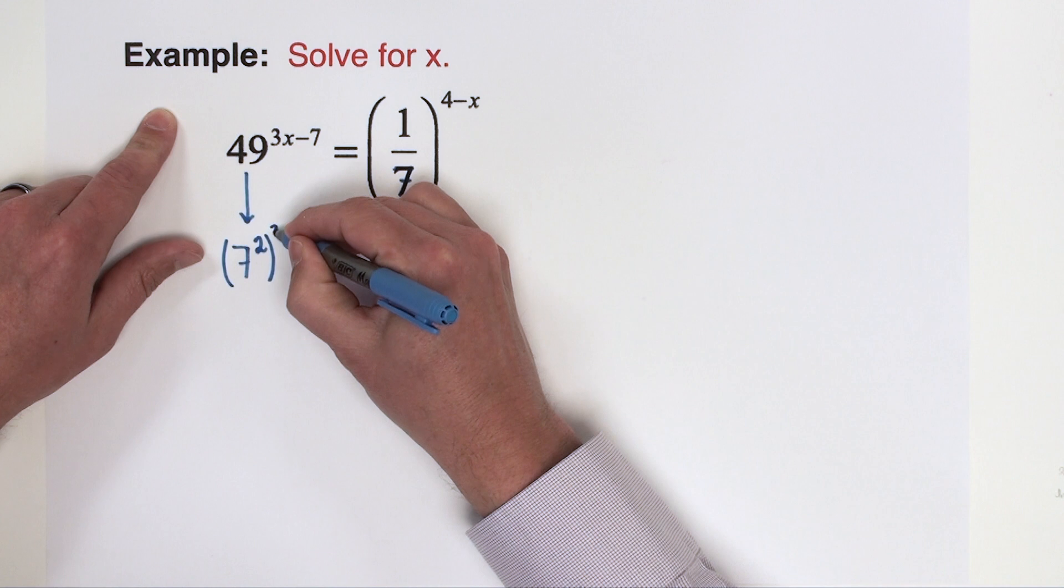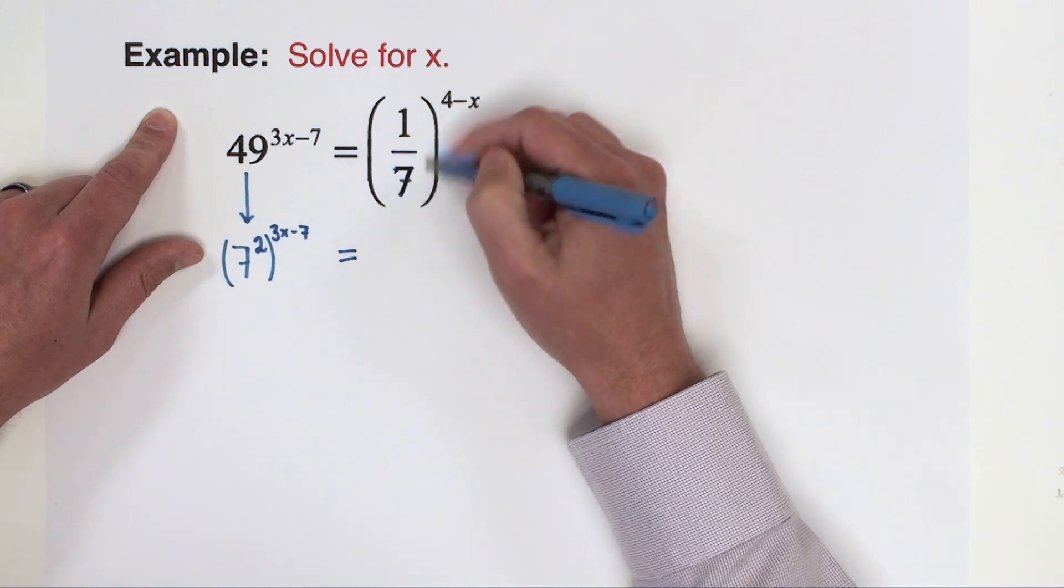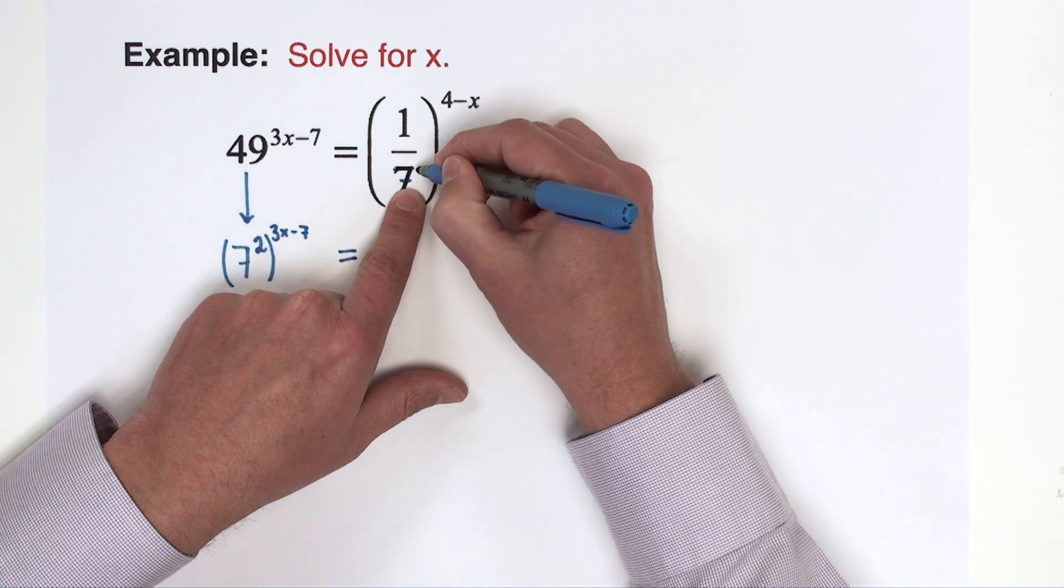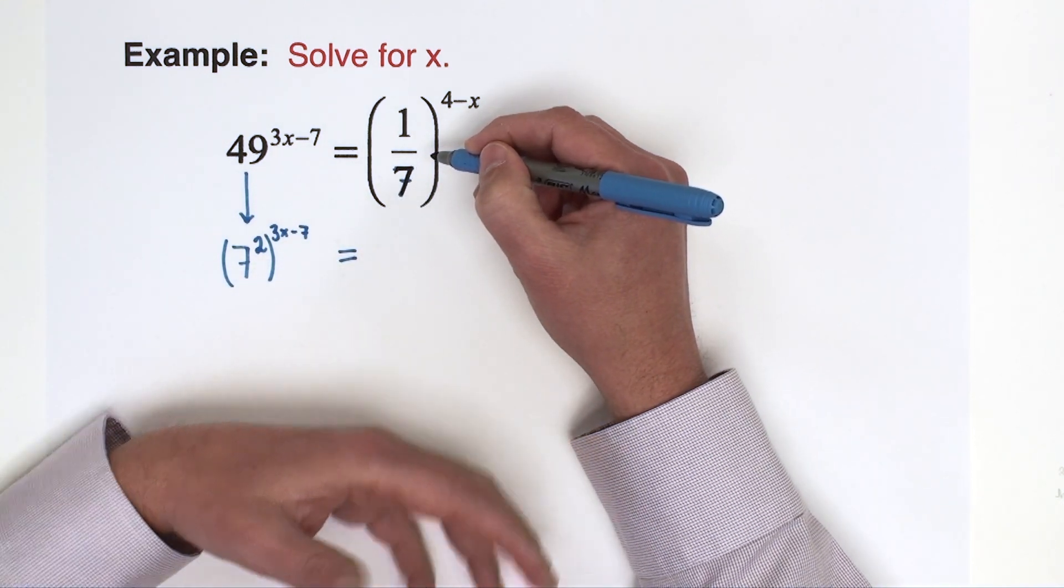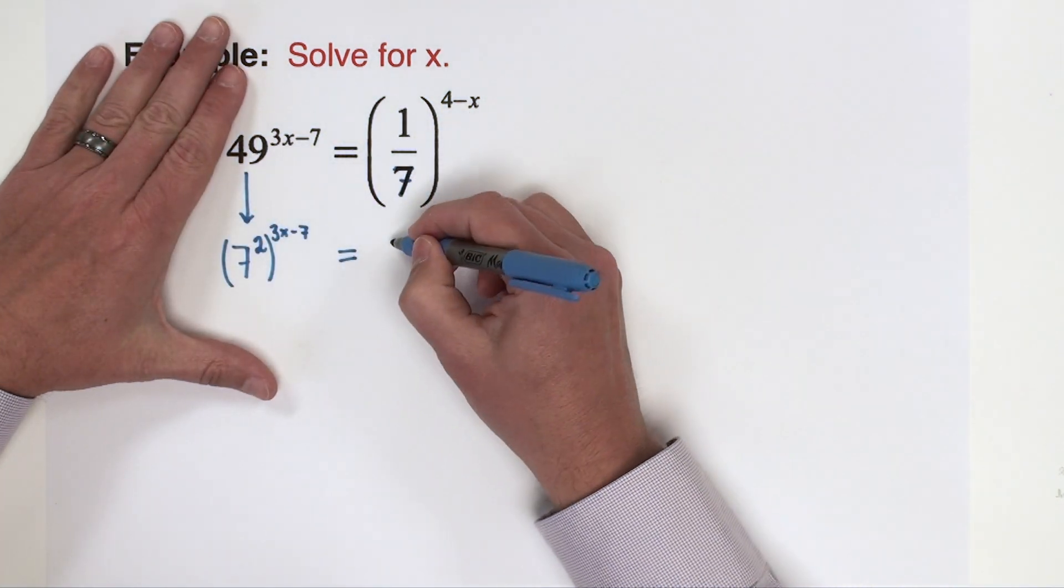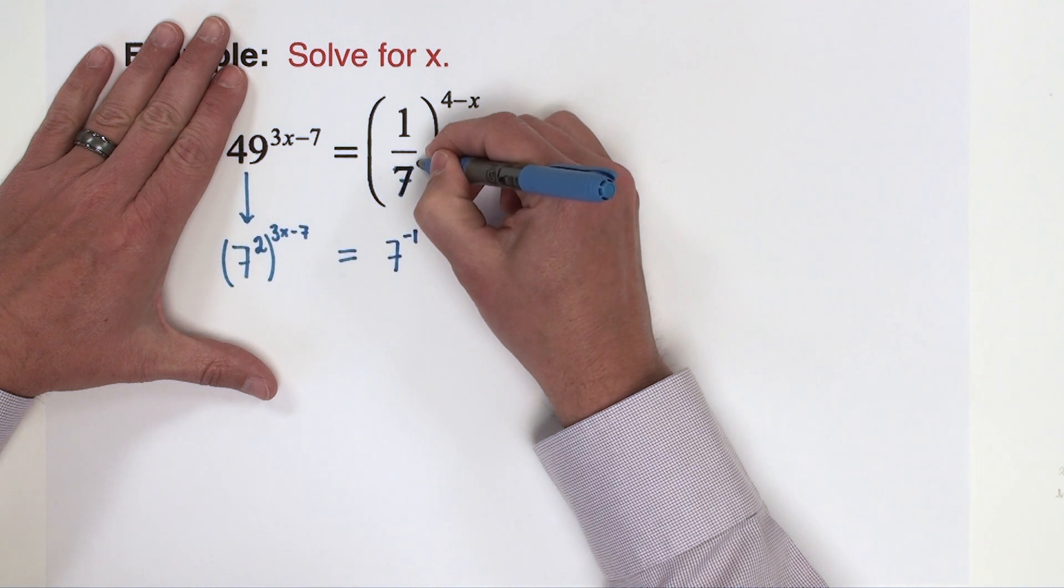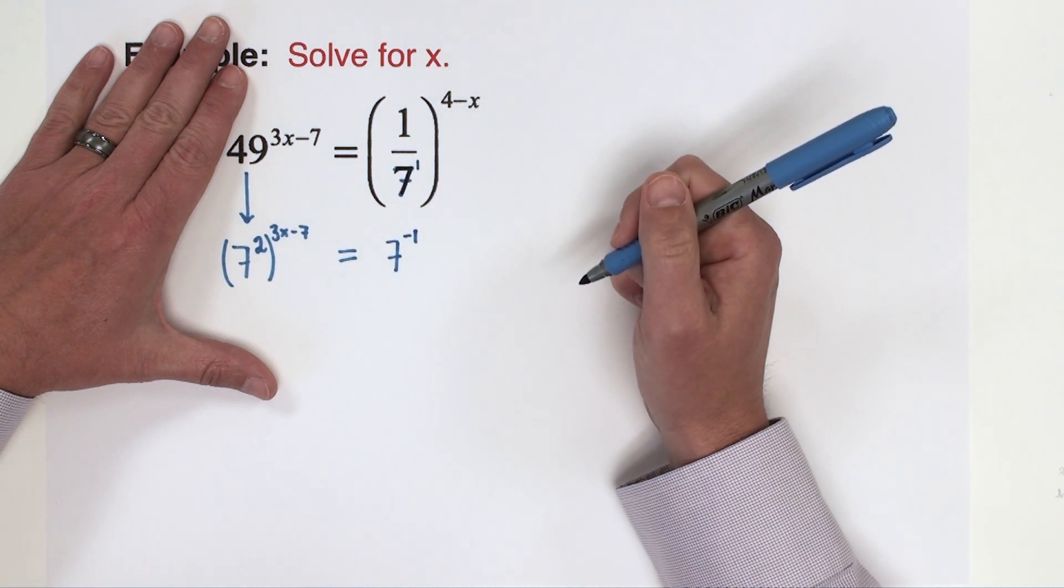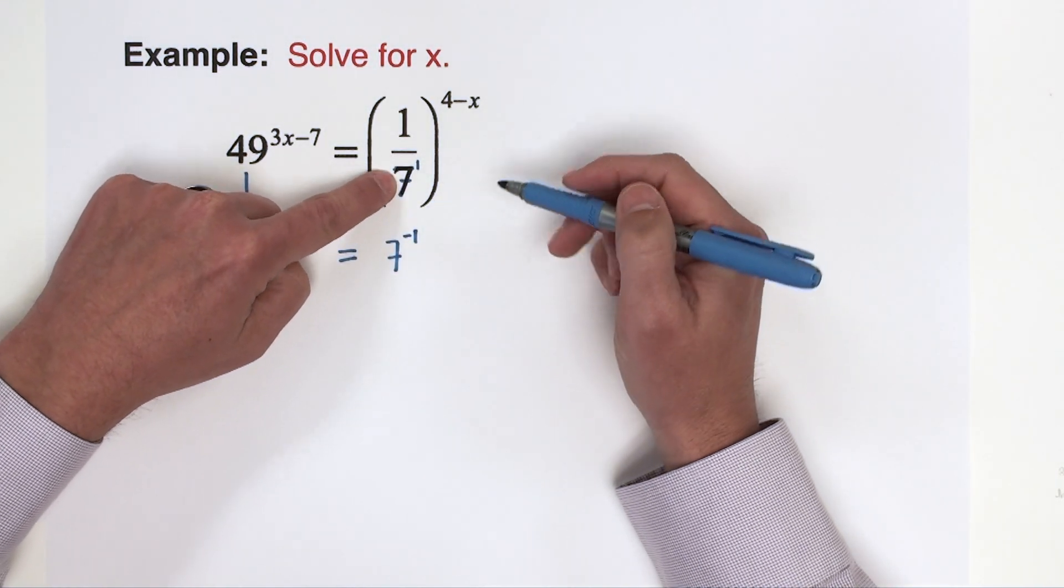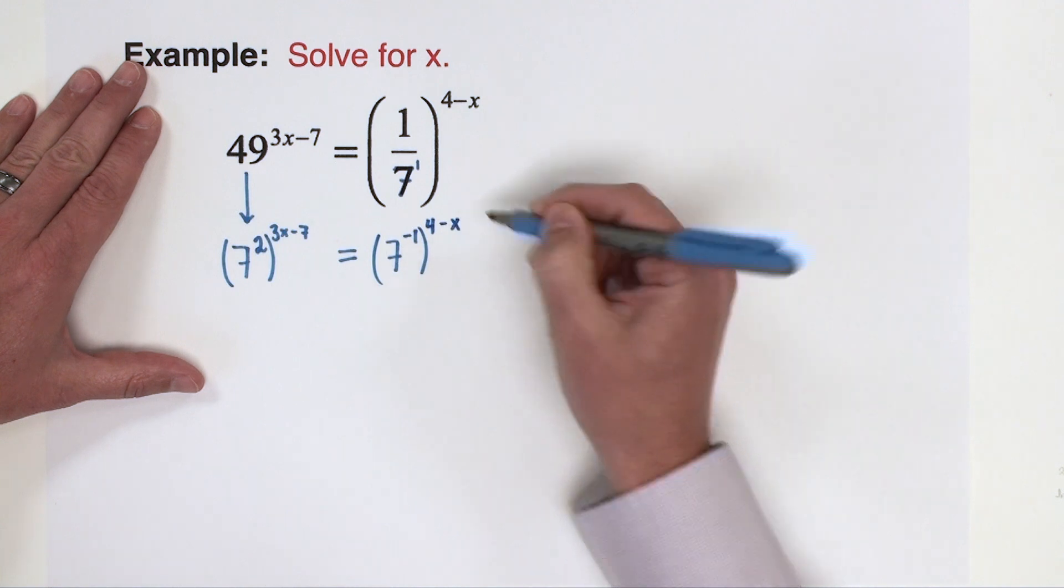We will keep this 3x minus 7 exponent there, and to get 1/7, to move the 7 essentially to the denominator of the fraction, that only moves to the denominator if we had a negative exponent. It's that property of negative exponents that reciprocate the fraction, so I can re-express 1/7 as 7 to the negative first power. I'm using 1 because this 7 right here has a first power implied, so if that power was negative originally, it would have moved that 7 to the denominator of the fraction. And then we're going to keep again this 4 minus x power there.